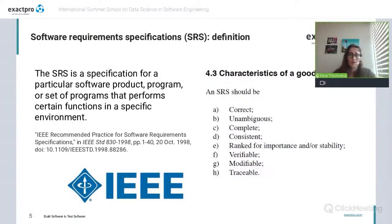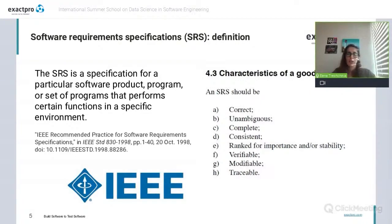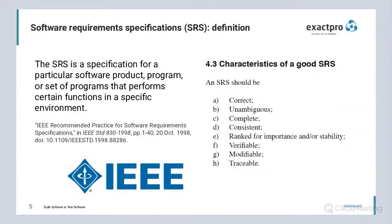A couple of words about the IEEE standard itself — it is pretty versatile and I like the way it presents information. It contains very good practical advice and can give you an understanding of the best way to structure your requirement specification and why. The same standard outlines the quality characteristics of good software requirement specifications: correctness, unambiguity, completeness, consistency, ranking for importance and stability, verifiability, modifiability, and traceability.